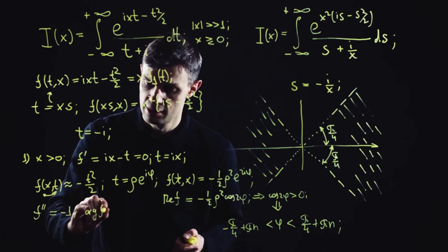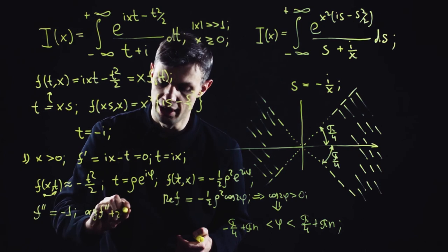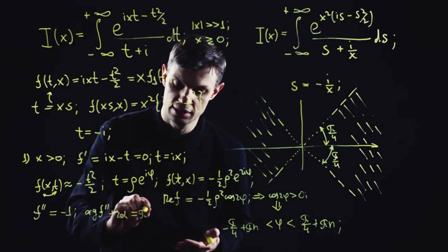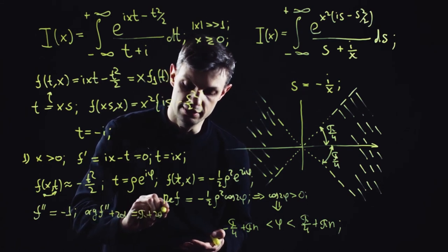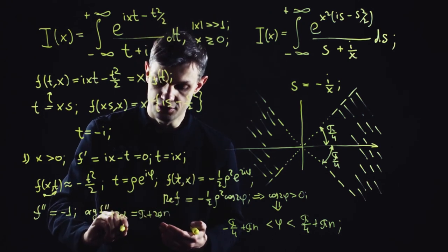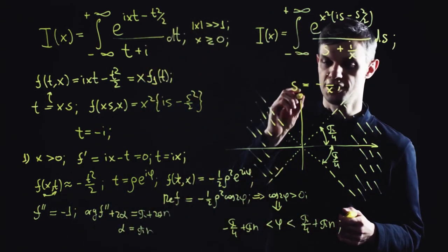And the steepest descent direction is defined by the argument of the second derivative. So it's the argument of the second derivative plus 2 alpha, where alpha is the steepest descent direction, must be equal to pi plus 2 pi n. So the argument is pi. So the steepest descent direction is simply pi n. So it's horizontal direction.